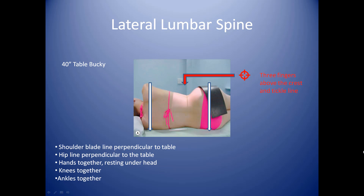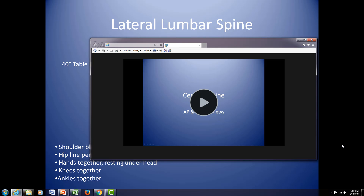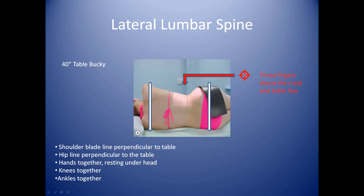For the lateral lumbar spine, we're again at the 40-inch table bucky location. You want to get your patient as perpendicular to the table as possible. To do that, feel the top and bottom scapulas — if they feel perpendicular to the table, you're doing a good job. You also want to align their hips perpendicular to the table, eyeballing the rear end to see if it looks relatively flush in a perpendicular format.